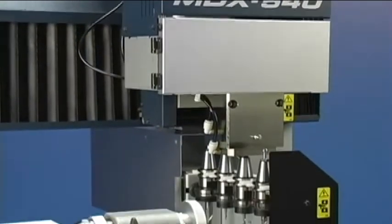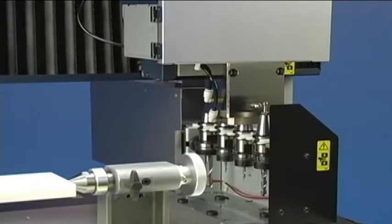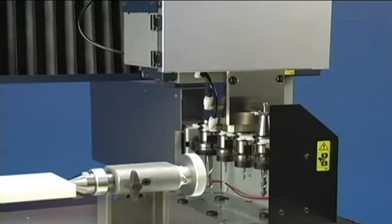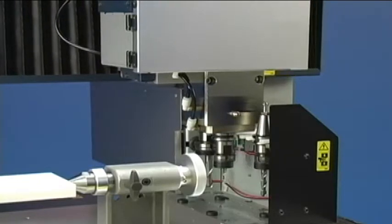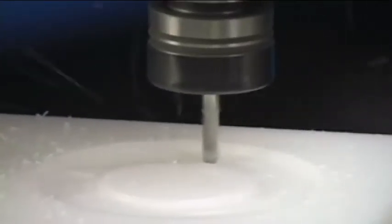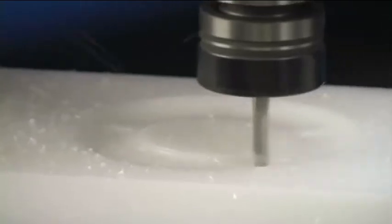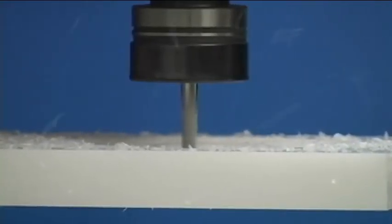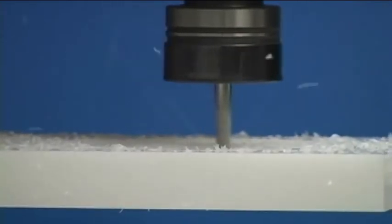From here, the Roland MDX 540 takes over. It will automatically select tools as needed. The process begins with a rough pass to remove large amounts of material. This is followed by additional passes to perform finer milling and surface finishing.